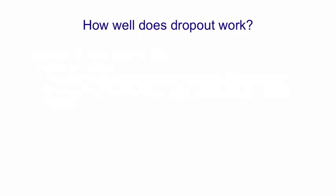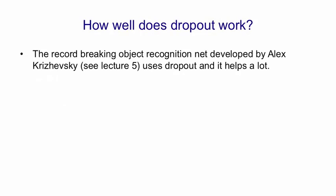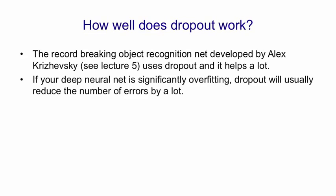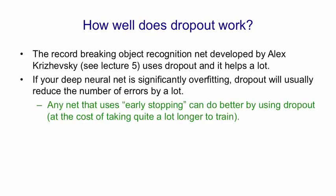So how well does dropout work? Well, the record-breaking object recognition net developed by Alex Krizhevsky uses dropout and it helps a lot. If your deep neural net is significantly overfitting, dropout will usually reduce the number of errors by a lot. Any net that uses early stopping can do better by using dropout at the cost of taking quite a lot longer to train.